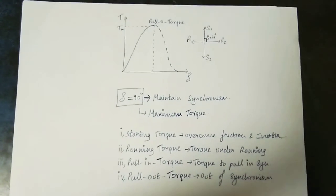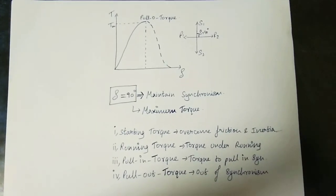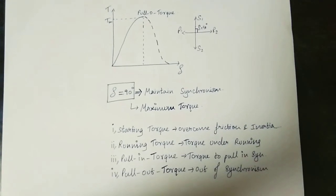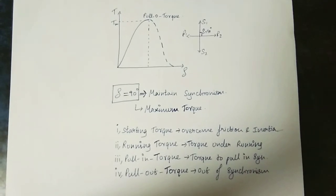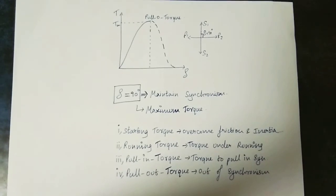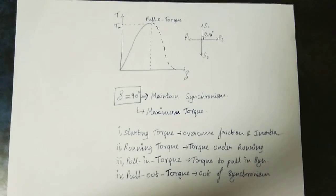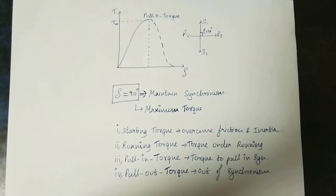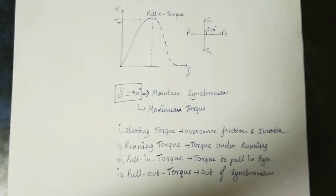Running torque is the torque developed while the motor is running under load. Pull-in torque: the synchronous motor initially starts and reaches near-synchronous speed. Starting torque increases to running torque, and then the stator magnetic field locks magnetically with the rotor — this is magnetic locking. Pull-in torque pulls the motor into synchronism at synchronous speed. Pull-out torque is the torque at which the motor comes out of synchronism.